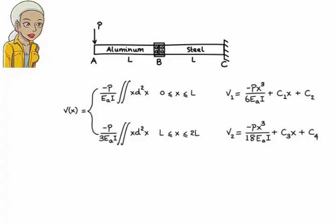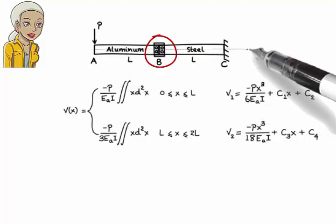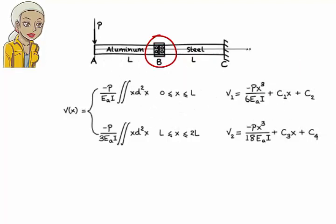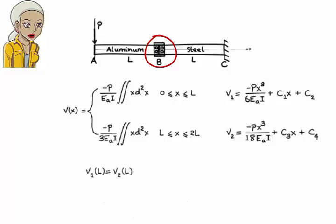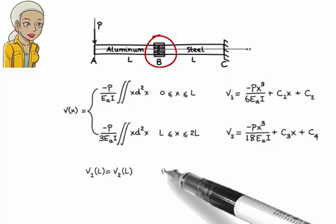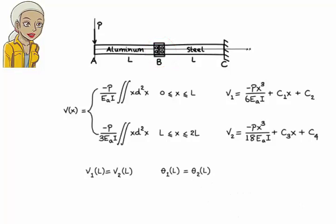To solve for the integration constants C1 through C4, we need four boundary condition equations. We can get two equations by imposing two continuity constraints at point B, where the aluminum segment is attached to the steel segment. Equation 1: deflection must be continuous at B, that is V1 at L equals V2 at L. Equation 2: slope of the elastic curve must be continuous at B, hence theta1 at L equals theta2 at L.